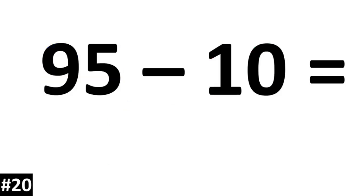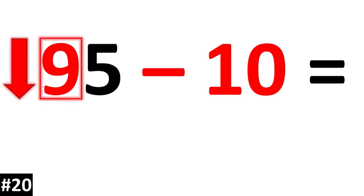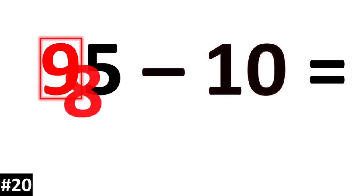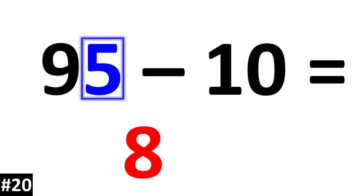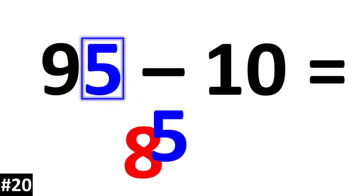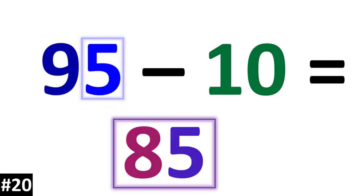95 minus 10. The tens digit of 9 is going to go down to 8. The ones value stays the same, so we have 85.